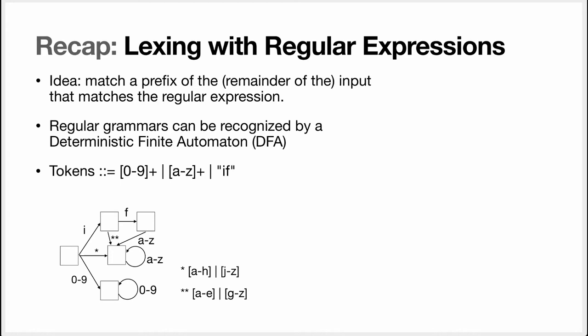So last time we saw that the idea for lexing with regular expressions is that you are going to have one regular expression per token that you want to match and you're going to join all these regular expressions in a bigger regular expression by using a choice. Then you'll go through the input and at each step you want to match a prefix of what's left to this big regular expression and the particular choice that will get matched will give you which token you matched.